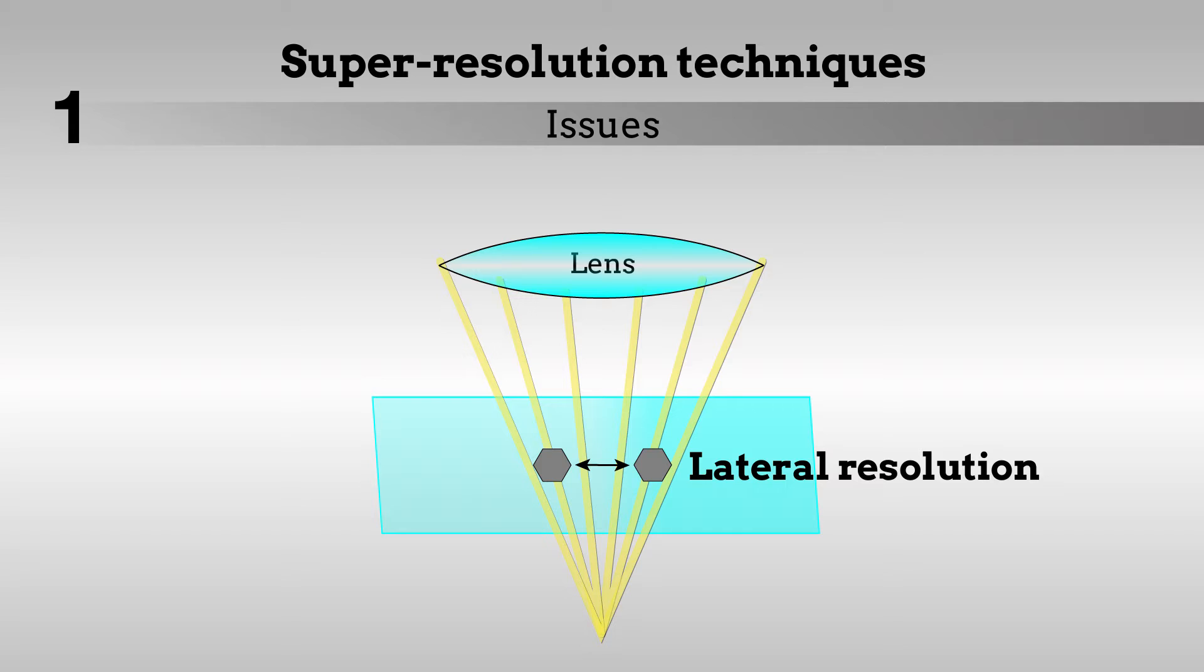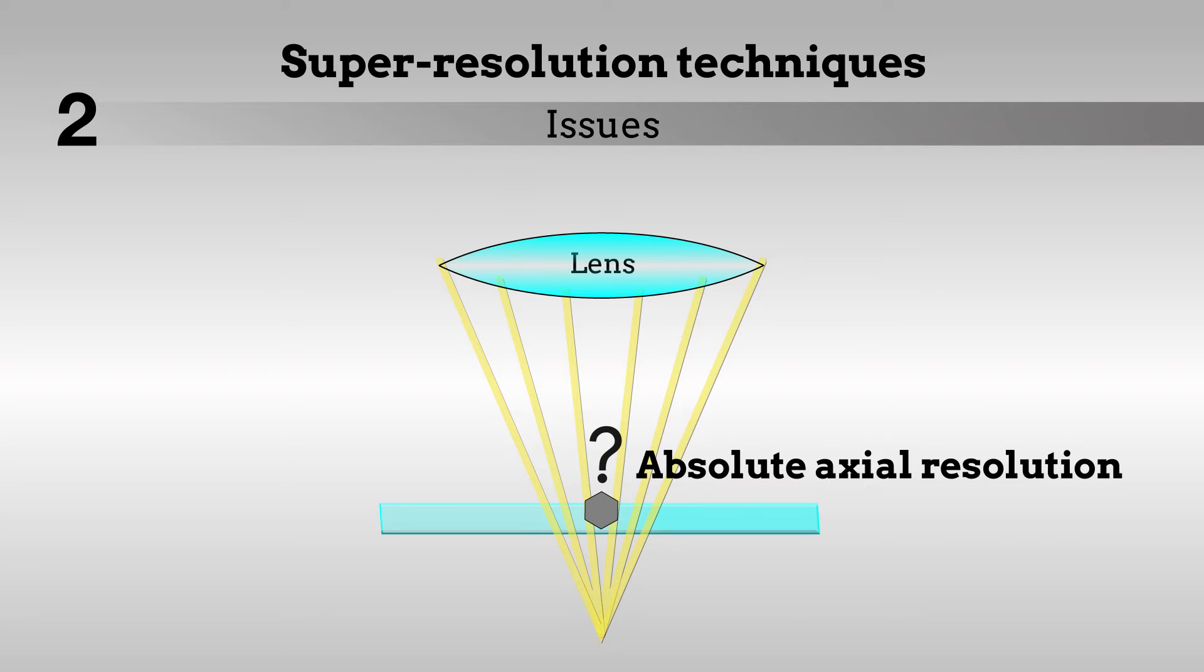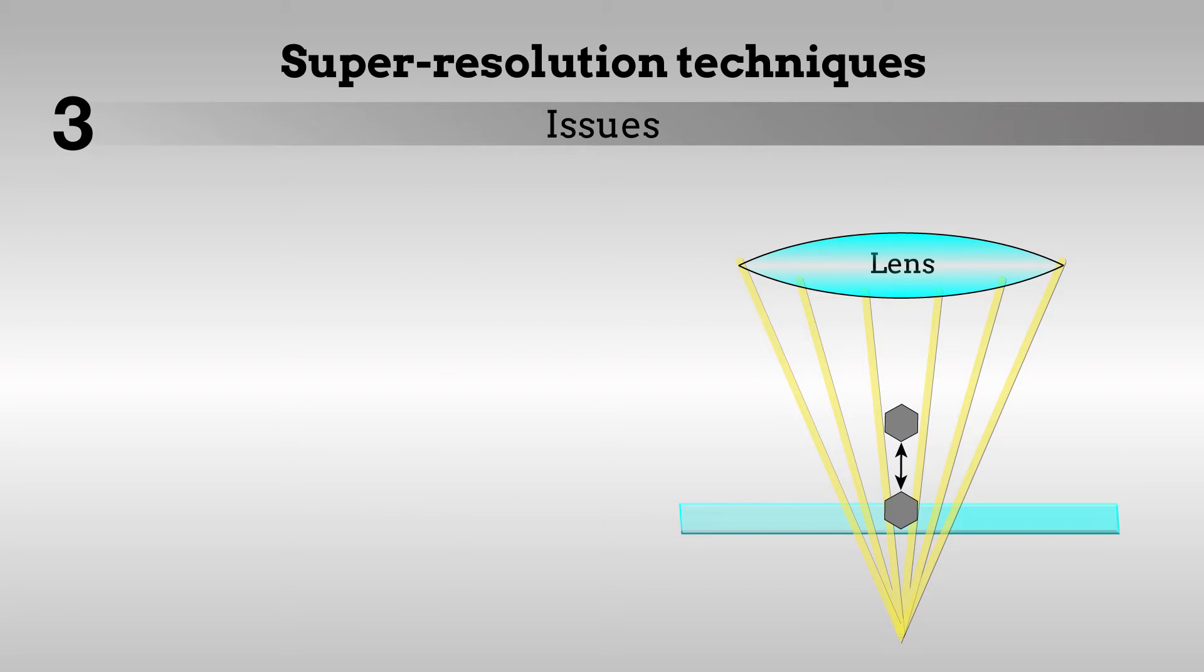It is fairly simple to improve the lateral resolution, but scientists have struggled to find a way to improve the axial resolution. The second problem is that current techniques don't offer absolute axial resolution. That is, they can't tell exactly where an object is axially, only where it is in relation to other objects. Finally, the experimental setups for these techniques tend to be expensive and complex, straining the resources of laboratories.